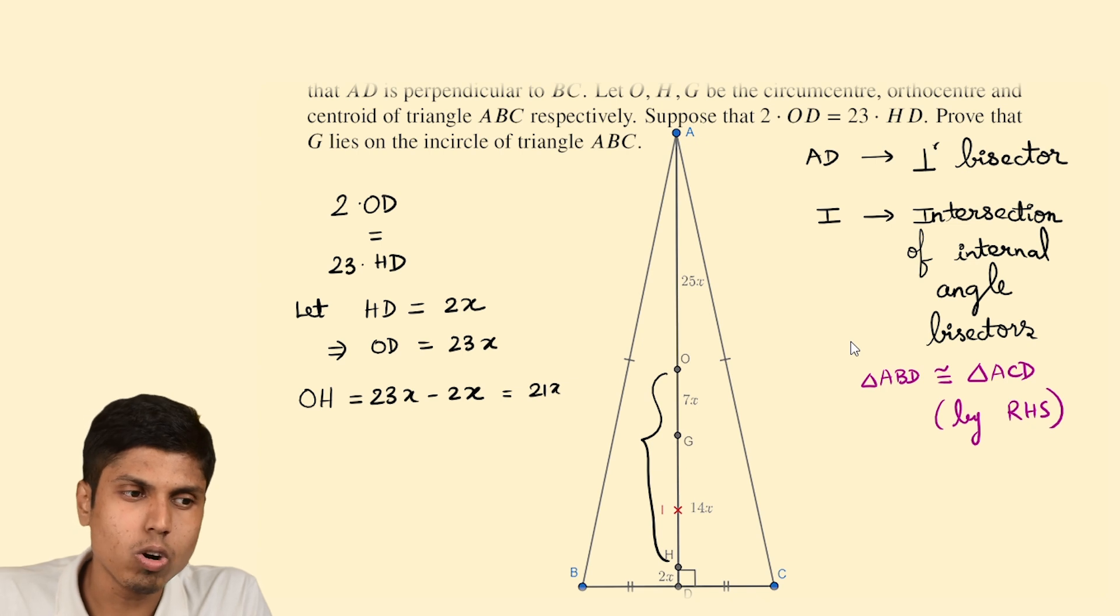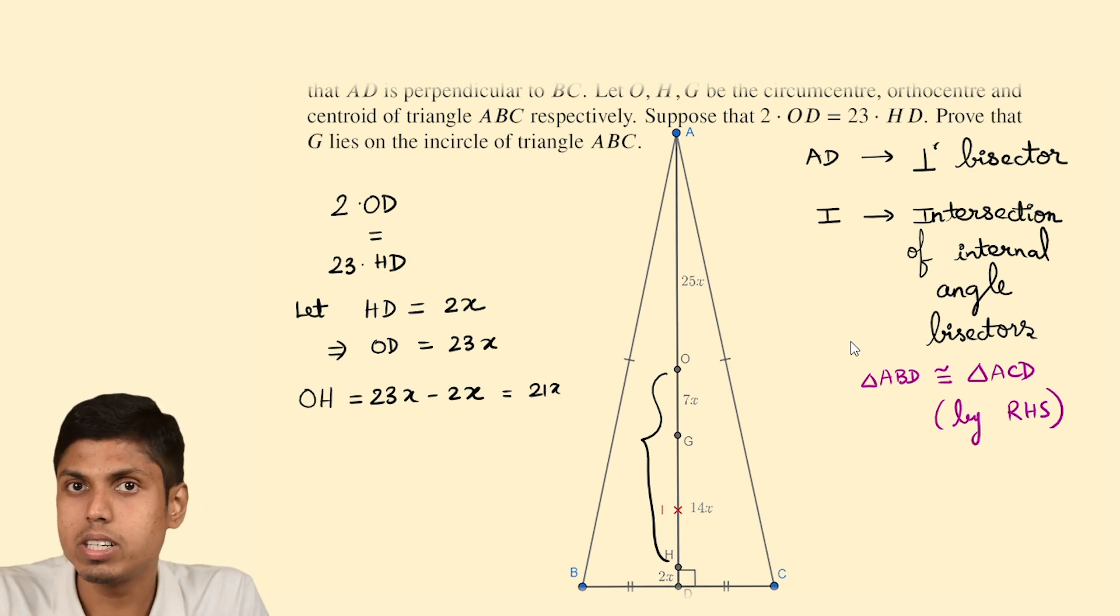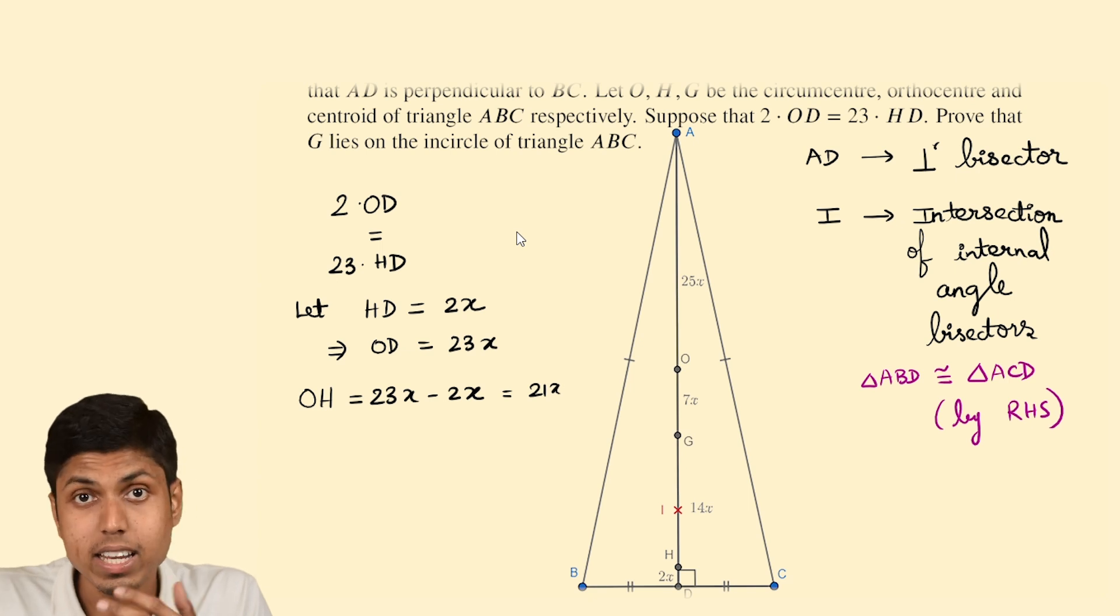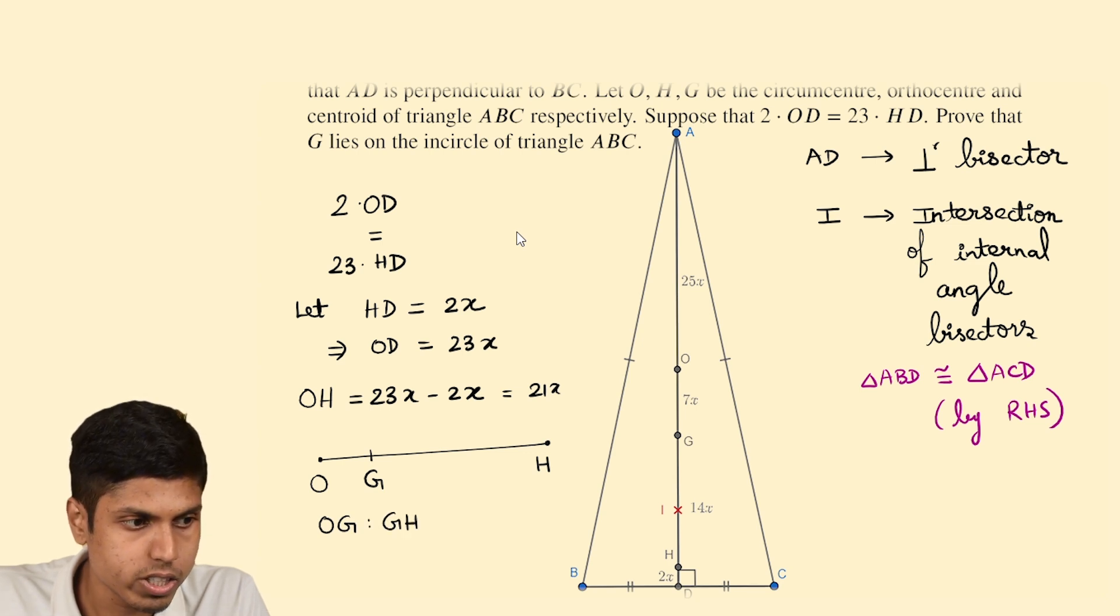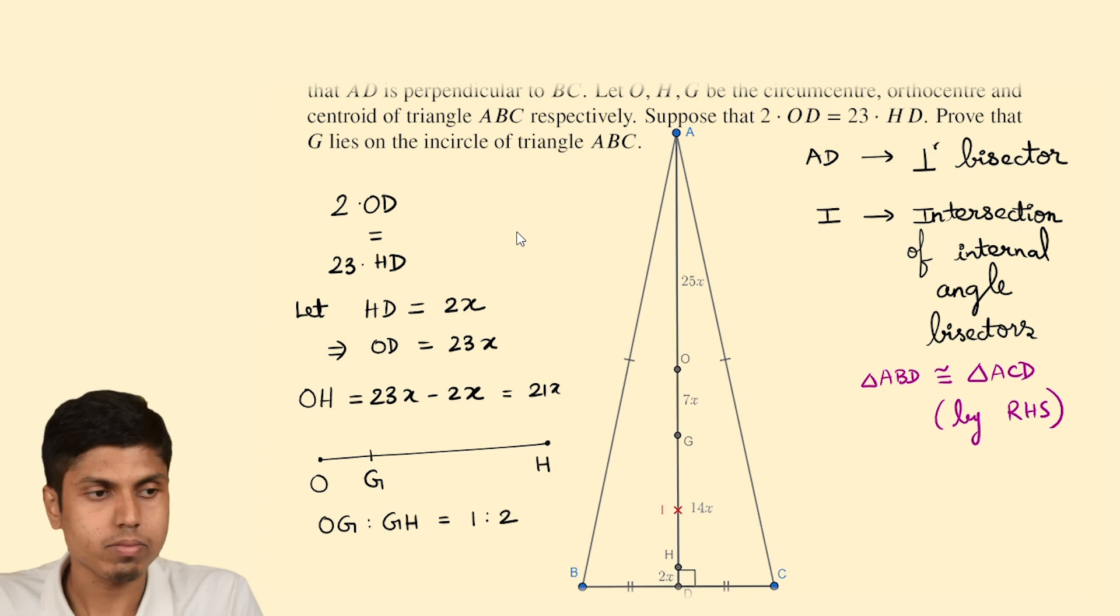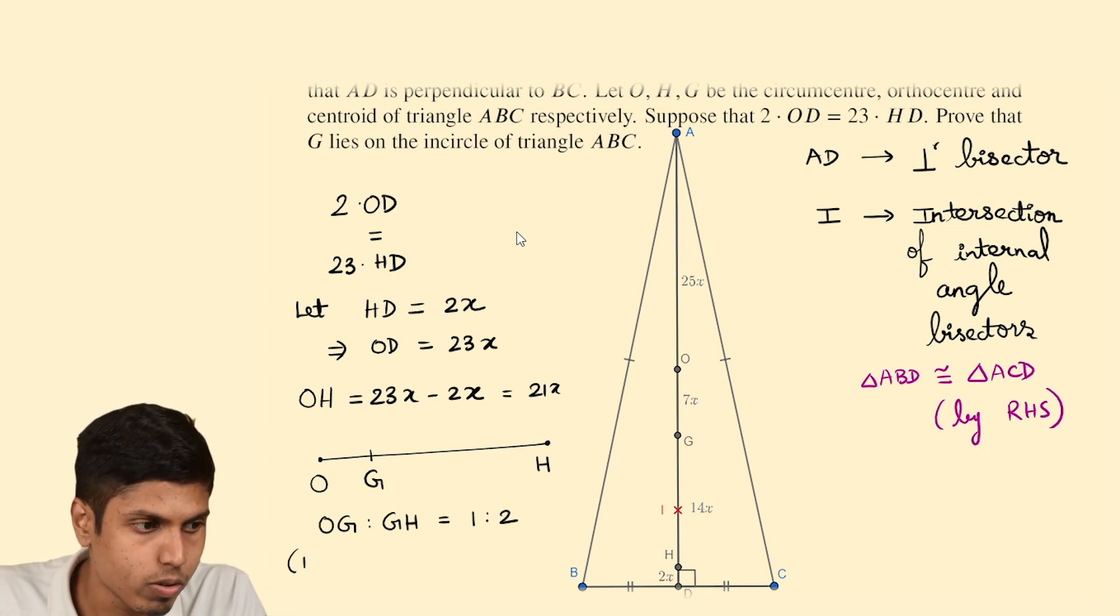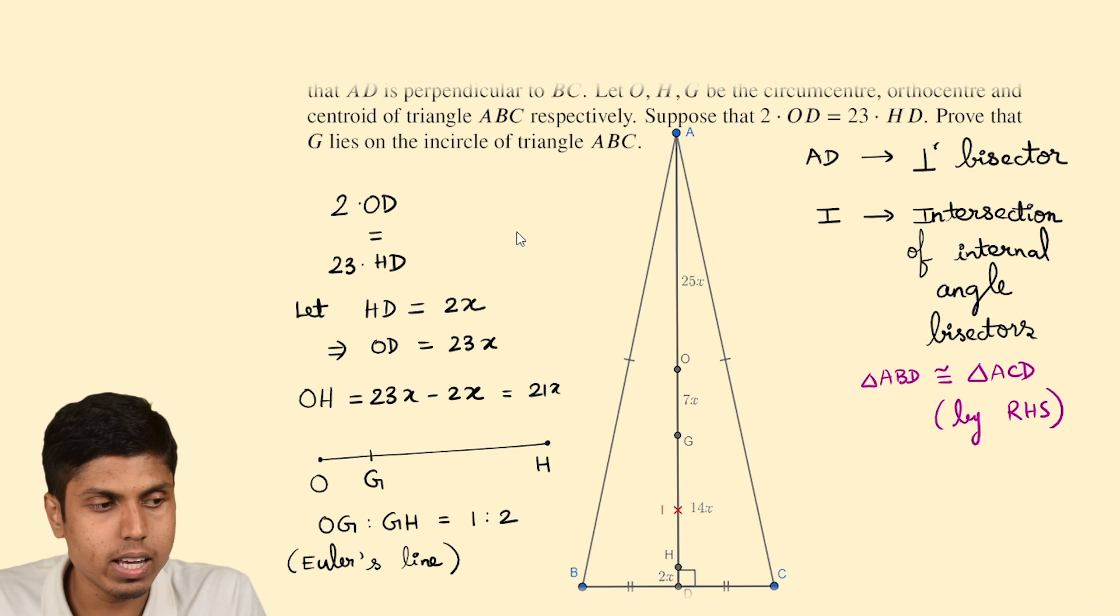So this length will be 21X. But how will I find OG and GH? Let's use the idea of Euler's line. We know that in any triangle points O, G and H are collinear. In that order they divide the segment OH in the ratio 1 is to 2. That is OG into GH equals 1 is to 2. So this is a consequence of Euler's line because the 3 will be collinear in any triangle in that ratio.